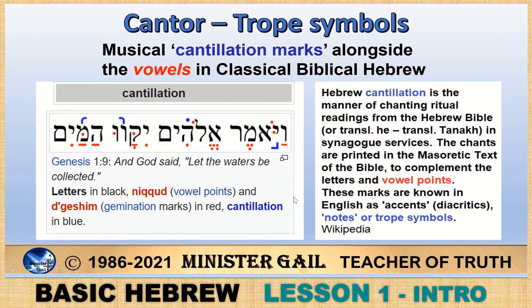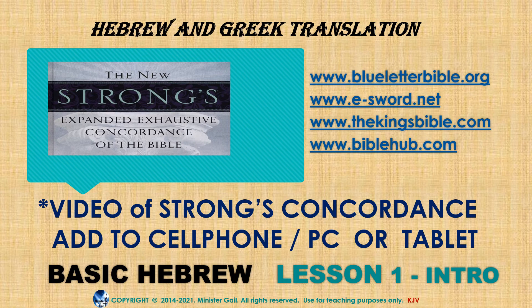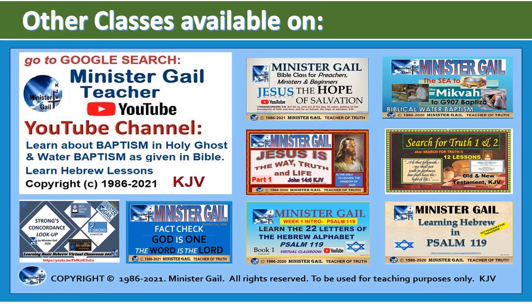That is also on YouTube — if you want to look up cantor or trope, the Jewish or Hebrew cantor or trope, you can hear it on YouTube. The following is a small video on how to use the Strong's Concordance online and add it to your cell phone, PC, or tablet — it will also have the Hebrew and Greek translations. There are four easy websites covered in the video. If you go to Google search 'Minister Gail' I have other classes available on my YouTube channel — more on salvation, the Strong's Concordance, and Hebrew classes.